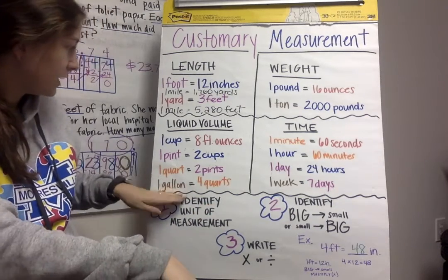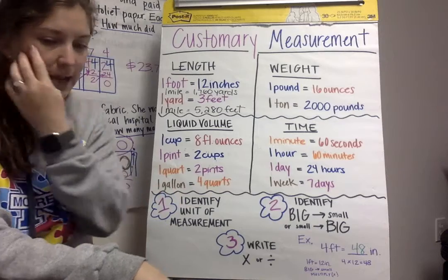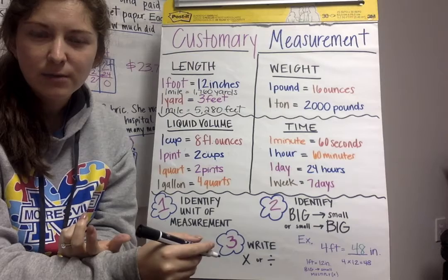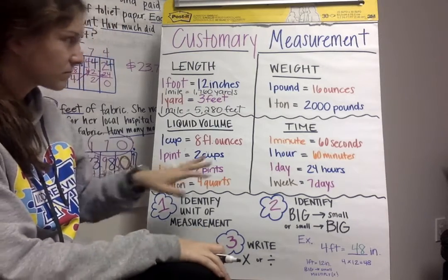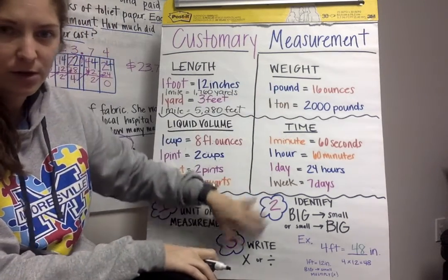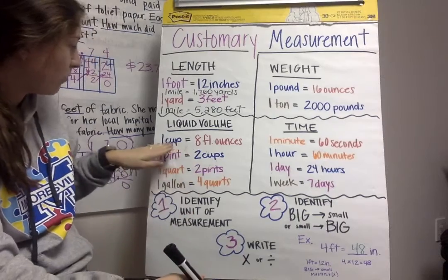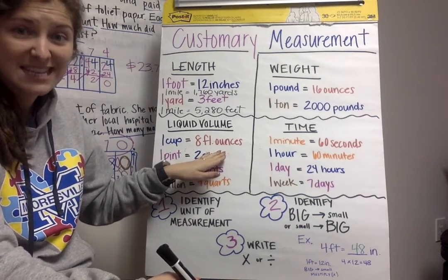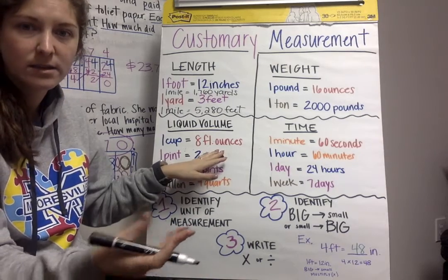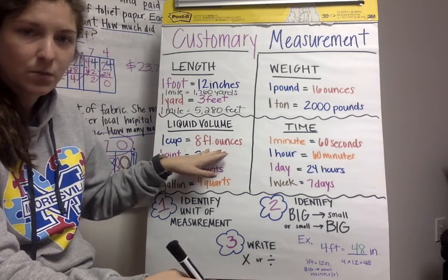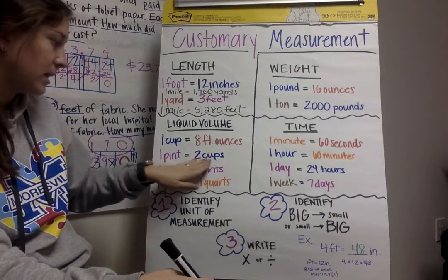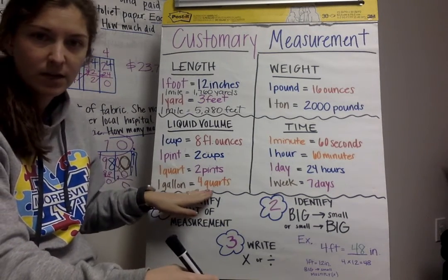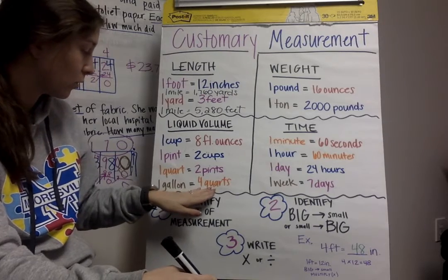So then we have liquid volume down here. And maybe you guys have heard of like the gallon land or gallon man. I think some of you guys did that before. We have one cup is 8 fluid ounces, and notice 8 fluid ounces is different than 8 ounces in weight. This is fluid ounces, so this is with liquid. We have one pint equals 2 cups, one quart equals 2 pints, and one gallon equals 4 quarts.